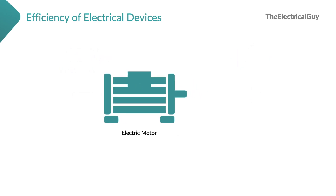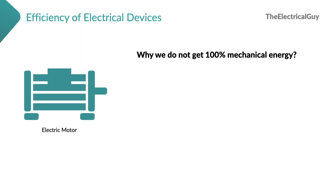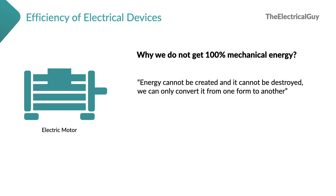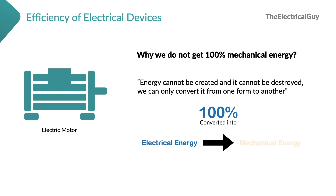The question is: why do we not get 100% mechanical energy as output when we are giving 100% electrical energy as input? We know a very basic rule about energy — energy cannot be created and it cannot be destroyed; we can only convert it from one form to another. In an electrical motor, ideally, when all the input electrical energy is converted into output mechanical energy, then and only then can we have 100% output.